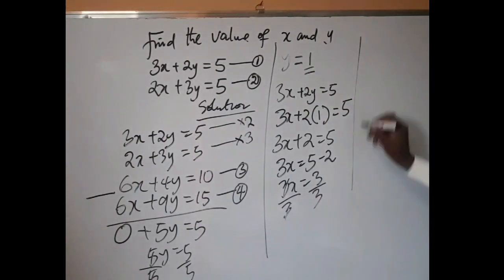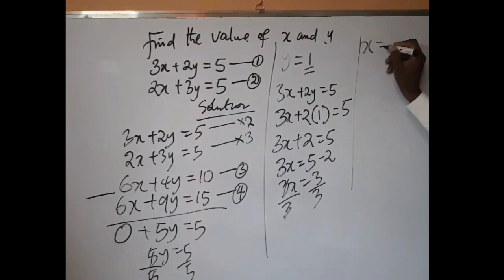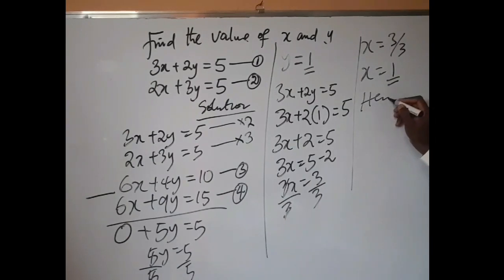So it simply means that my x will be equal to 3 over 3, and 3 divided by 3 is equal to 1.